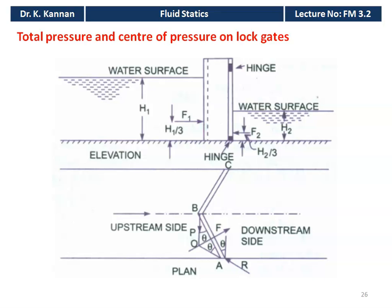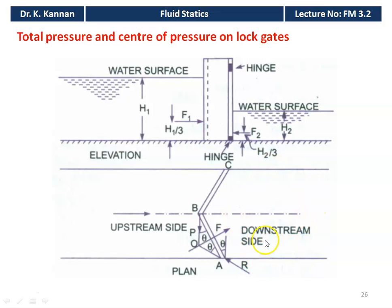We first discuss the total pressure and center of pressure for log gates. This is the diagram of the log gates — two views, elevation and the plan, are given here. There are two gates mentioned by AB and BC. This is the upstream side of the water, stored in a dam-like structure. When you open the gate, the water will flow. This is the downstream side of the water.